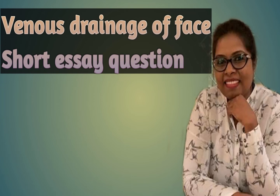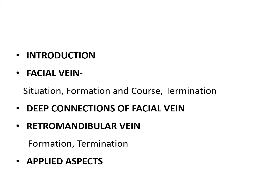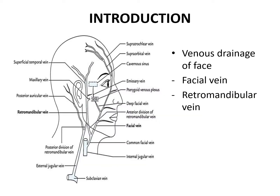Hello everyone, today we are discussing the venous drainage of the face. This is a short essay question carrying five marks. In the exam, you will present under the following headings: an introduction on which veins carry out venous drainage, the facial vein — its situation, formation, course, and termination — the deep connections of the facial vein, the retromandibular vein, and the applied aspects. The venous drainage of the face is mainly done by two veins: the facial vein and the retromandibular vein.